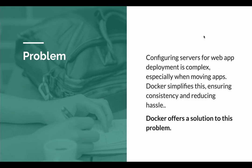Let's start with the problem we were facing. Configuring servers for web deployment is complex, especially when moving applications. When we deploy applications on any server, we have to make a lot of settings — like installing the operating system, frameworks, and packages. But when we shift our application from one server to another, we have to make these changes again. It can be a huge hassle for bigger projects. An app working on one server may not work on another server.